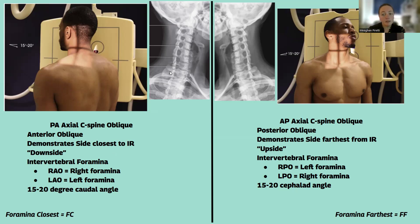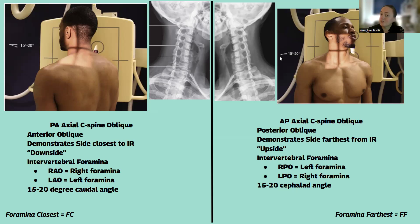For the AP axial oblique, these are your posterior obliques because the patient is AP and the posterior is touching the IR. These show the upside or the side farthest. RPO means right posterior is down, so the left side is away — the upside. You'll also switch to a 15 to 20 degree cephalad angle. The angles flip: if you normally angle down for a PA, you angle up for an AP. AP axial C-spine or posterior obliques show the foramina farthest from the IR.